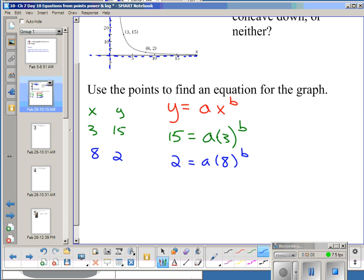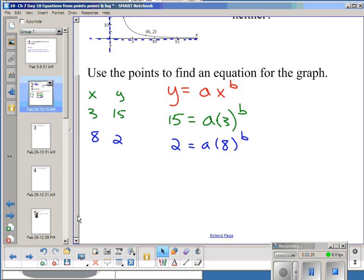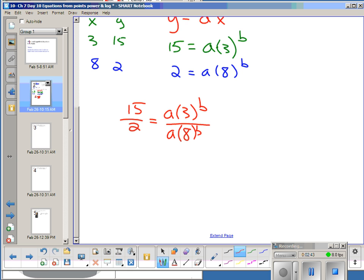Now I have two equations and two unknowns. I would like to combine them. I need to eliminate one of my variables so that I can solve for my other variable. And so the method I'm going to use to get rid of, since A is connected to the 3 to the B and to the 8 to the B by multiplying, is I'm going to divide my equations this time. And you can divide them in either order. And we're just going to take 15 over 2 has to equal A times 3 to the B over A times 8 to the B. Because my tops are the same, the 15 and the A times 3 to the B are the same. So if you take the same top, divide by an equivalent bottom, you should get the same ratio.